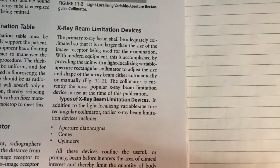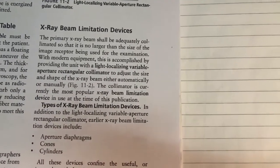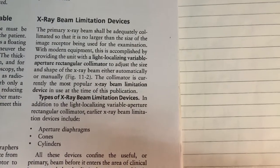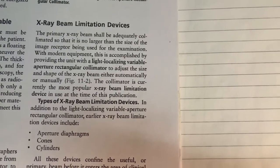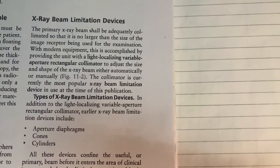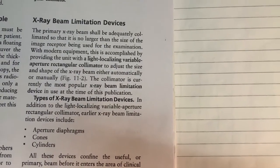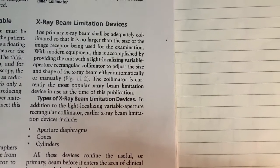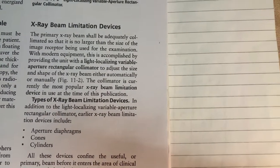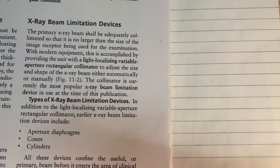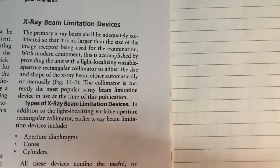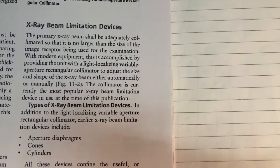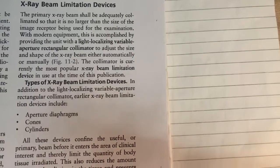With modern equipment, this is accomplished by providing the unit with a light localizing variable aperture rectangular collimator to adjust the size and shape of the X-ray beam, either automatically or manually. The collimator is currently the most popular X-ray beam limitation device in use.